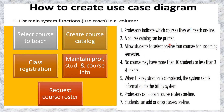For case scenario descriptions three, four, five, and seven, we need a use case for 'Class Registration,' since all those descriptions fall under the process of registration — such as allowing students to select courses online, no course may have more than 10 students or less, when registration is completed the system sends information to the billing system, and students can add or drop classes online. That is why we need the use case 'Class Registration.'